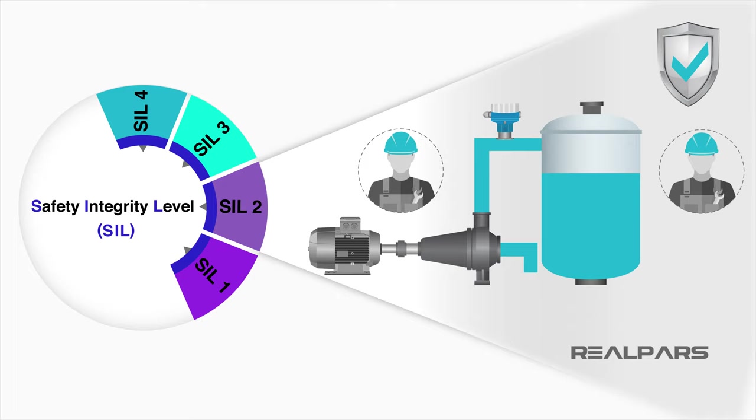SIL Level 2 represents the integrity to avoid more serious but limited incidents, some of which may result in serious injury or death to one or more persons.